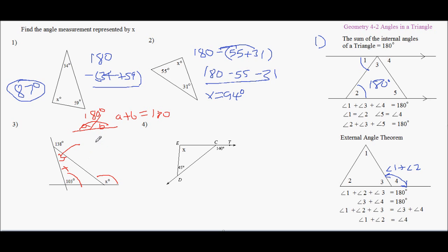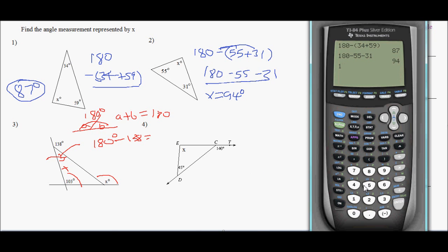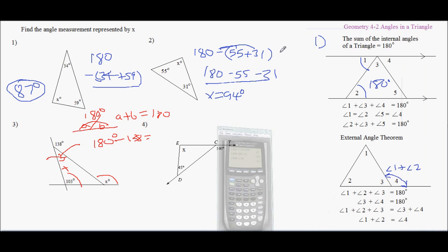So if I take 180 minus 138, 180 degrees minus 138, I'm going to get this angle here. So 180 minus 138, I'm going to get 42. So this angle is 42.